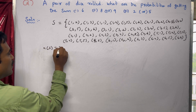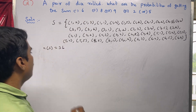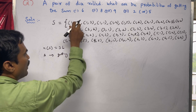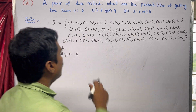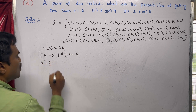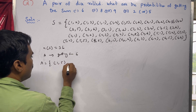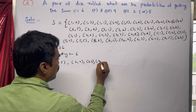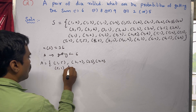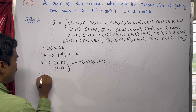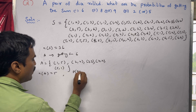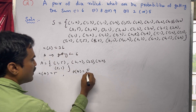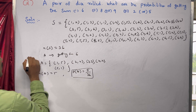We define event A as getting a sum of 6. That means when you add each pair the total should be 6. So A equals: (1,5), (2,4), (3,3), (4,2), (5,1). Total: n of A is 5. So probability of A is 5 divided by 36. That is the first answer.